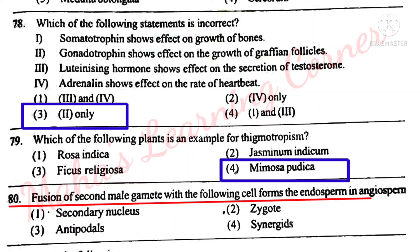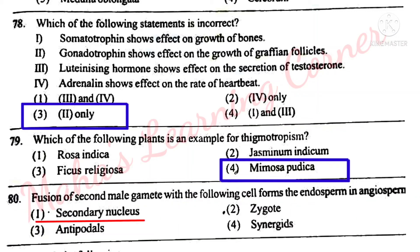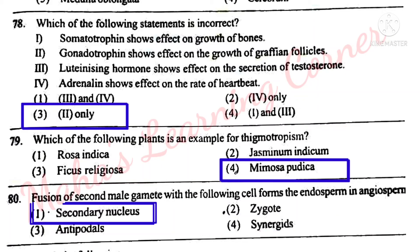Fusion of the second male gamete with which cell forms the endosperm in angiosperms? Options: Secondary nucleus, Zygote, Antipodals, Synergids. Correct answer: Option 1 – Secondary nucleus.